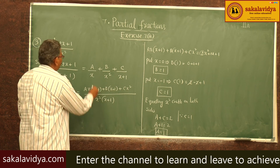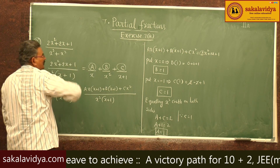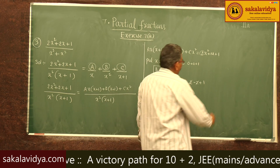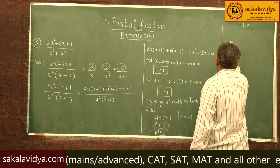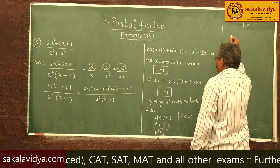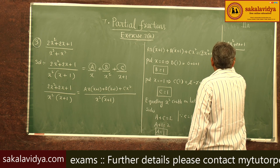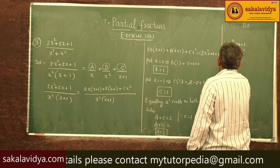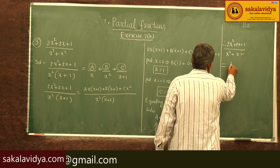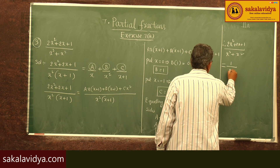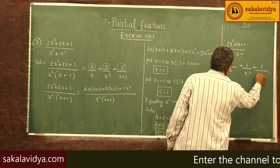Replacing the A, B, and C values, we get the partial fractions. Therefore, (2x² + 2x + 1) / (x³ + x²) = 1/x + 1/x² + 1/(x+1).